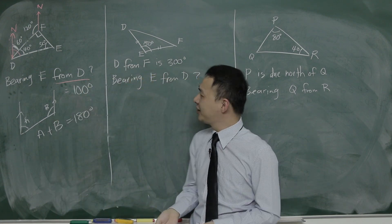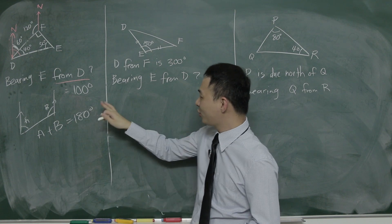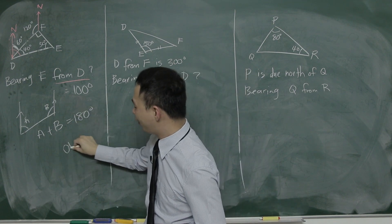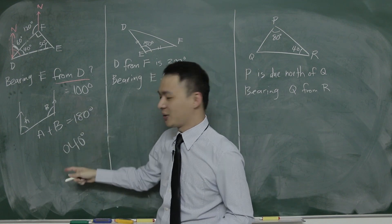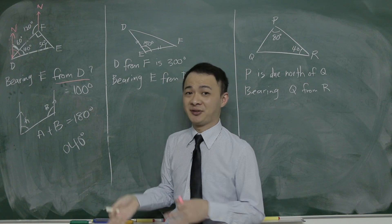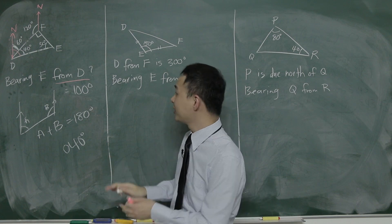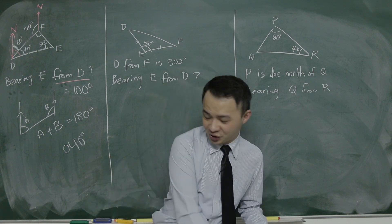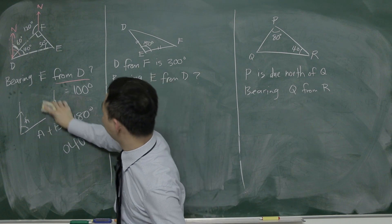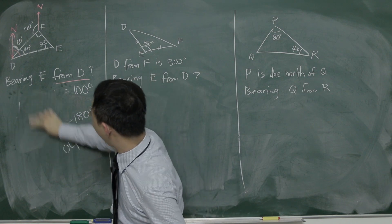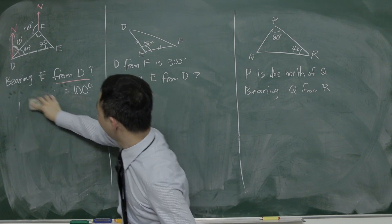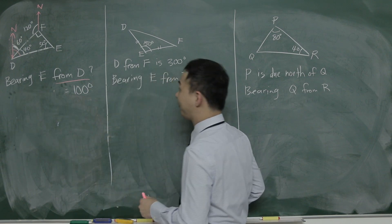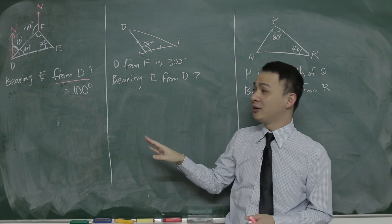Bearing is always written in three digits. So if the bearing is 40°, you write it as 040. Your bearing will always be in three digits. This is how we do the first bearing example — quite simple. I hope you understand it.